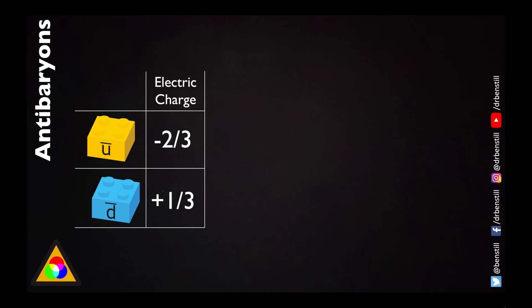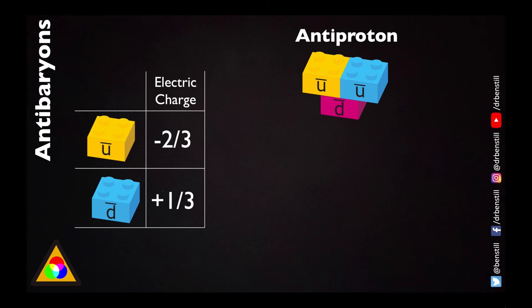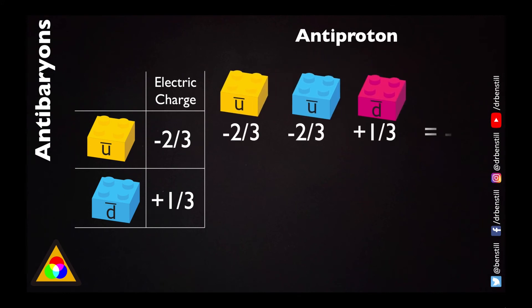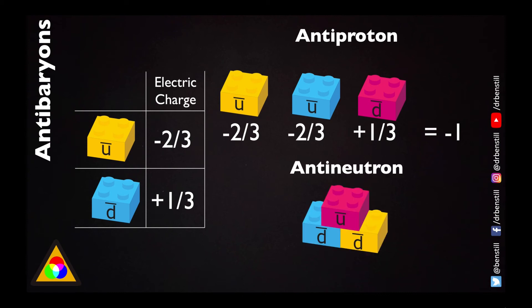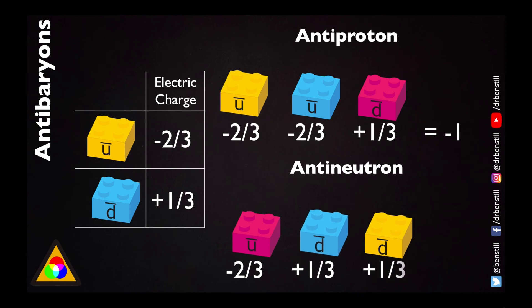Just as with baryons, the anti-baryon's properties are defined by the quarks that make it up. The anti-up quark has an electric charge of minus two-thirds, while the anti-down has a charge of plus one-third. For the anti-proton — two anti-ups and one anti-down — the sum is minus two-thirds minus two-thirds plus one-third, which equals minus one, the opposite charge to the proton. For the anti-neutron: minus two-thirds plus one-third plus one-third equals zero, as expected.